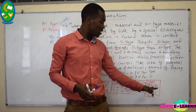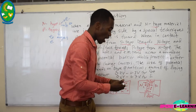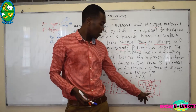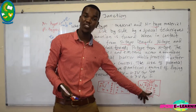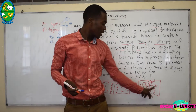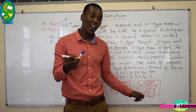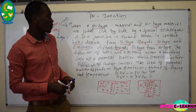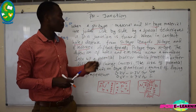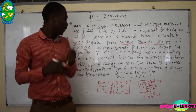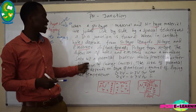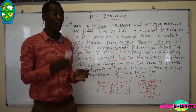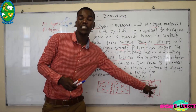Electrons jump from N-type material towards P-type material, whereas holes — which are positive charges — jump from P-type material towards N-type material. After reaching the other side, they create a layer of positive charge on one side and a layer of negative charge on the other. This layer of negative charge prevents further electrons from jumping from N-type to P-type, and the positive charge layer prevents further holes from jumping from P-type to N-type.